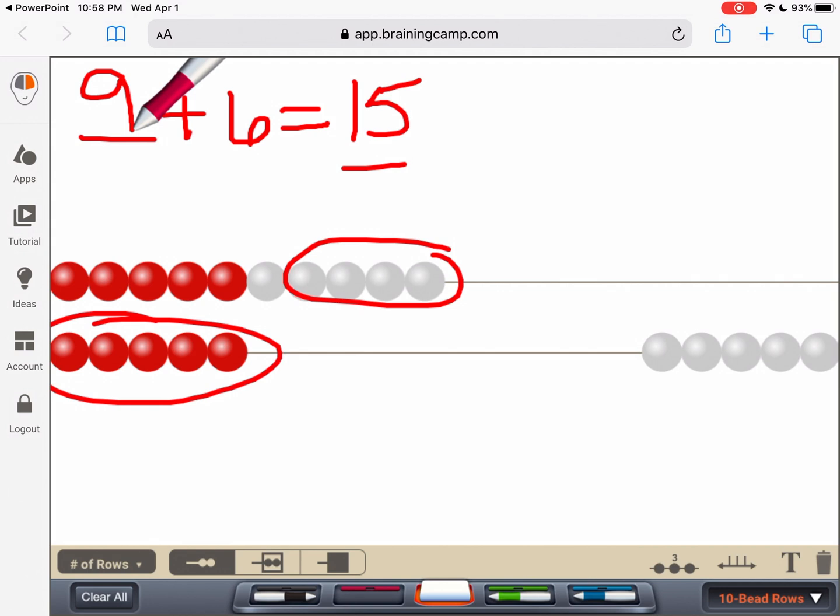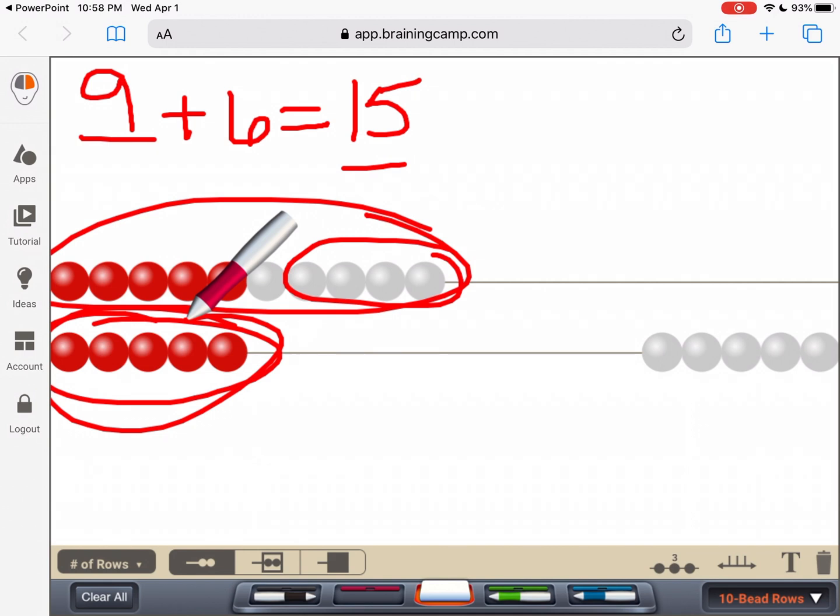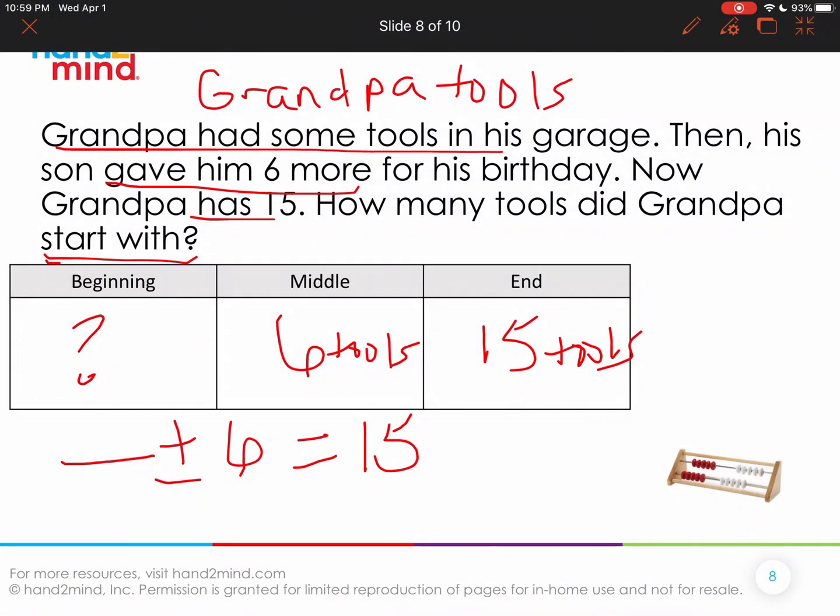So five and four is what? So these four and these five are what we're bringing over. Is that nine? Nine plus six equals 15. How do I know nine plus six equals 15? Well, because I see 10 on top and five on bottom. Yeah, that's a nice way of knowing that that's 15. So now we know that grandpa started with nine tools in his garage. And when his son gave him six, he ended up with 15.